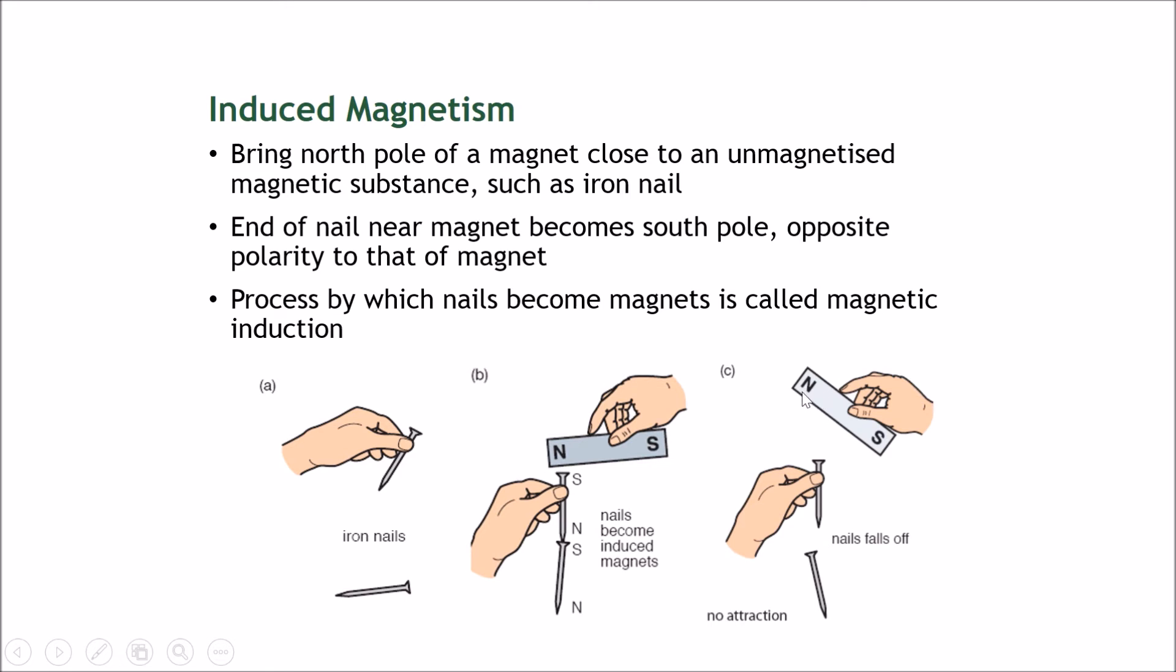When this north pole is brought away, the induced south pole of the first layer of nails is lost. When this south pole is lost, this north pole is also lost, and this is not a magnet anymore. If it's not a magnet anymore, then it can't attract the other nail, so the nail falls off.